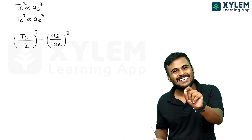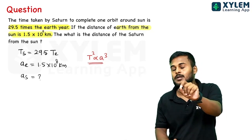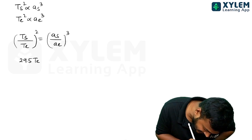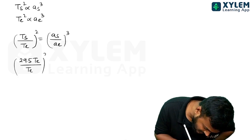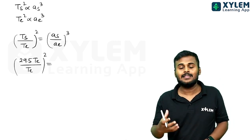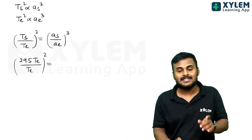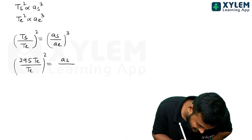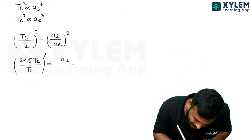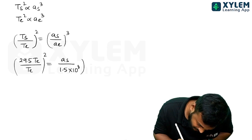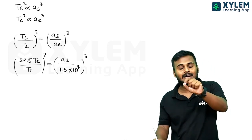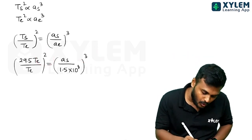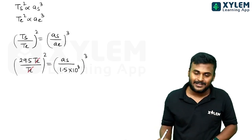The time period T_s is written as 29.5 times T_e. We replace and get: 29.5 T_e divided by T_e whole square equals a_s divided by a_e whole cube. The T_e terms will be cancelled on both sides by taking cubic root.